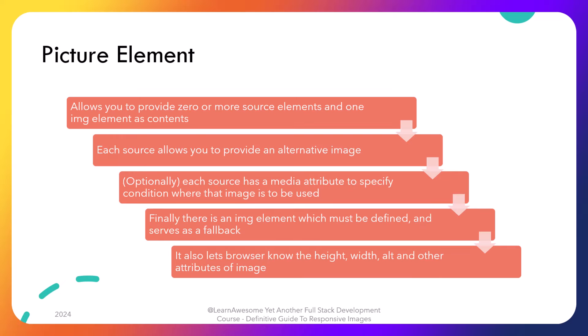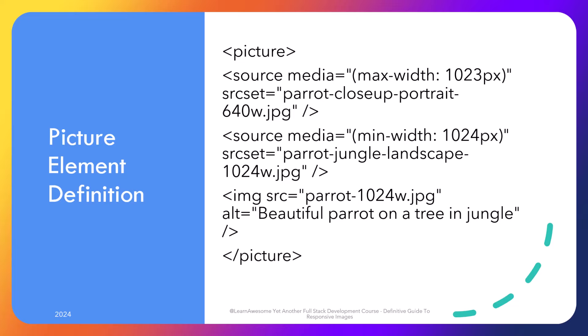To get around the art direction problem, the fix generally involves using a picture element, which is probably something you've never heard of before. The picture element allows you to provide zero or more source elements and one image element as its contents, allowing you to show alternative versions of an image for different display and device scenarios. Each source element has its own media query, which allows the browser to pick the closely matching variant. The image element also serves as a fallback in case the browser does not support the picture element, and lets the browser know the size, width, and other attributes.